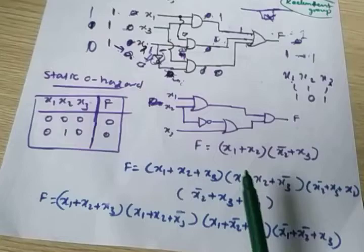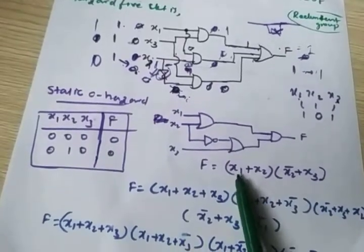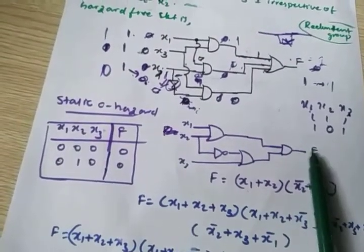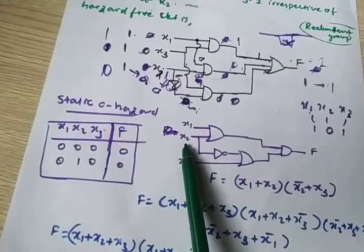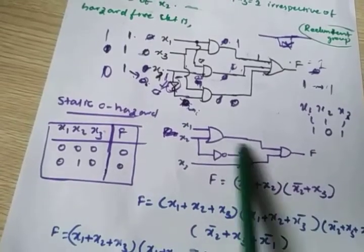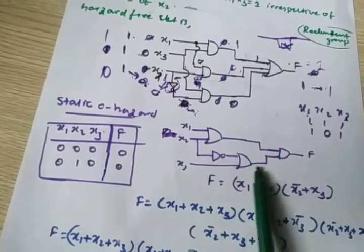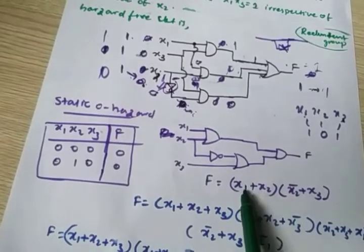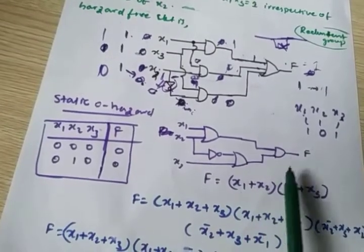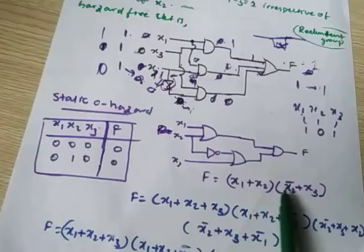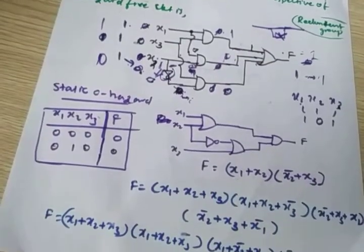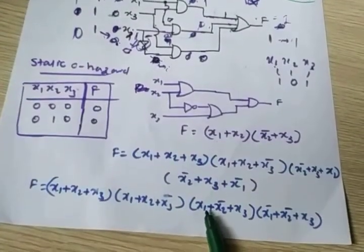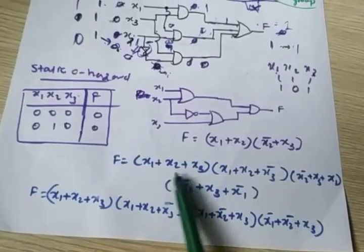So this is my expression: output f equals x1·x2 plus x2bar·x3, which can be written as (x1 plus x2) into (x2bar plus x3). This is the expression. In order to eliminate the hazard, here is what you have to do.